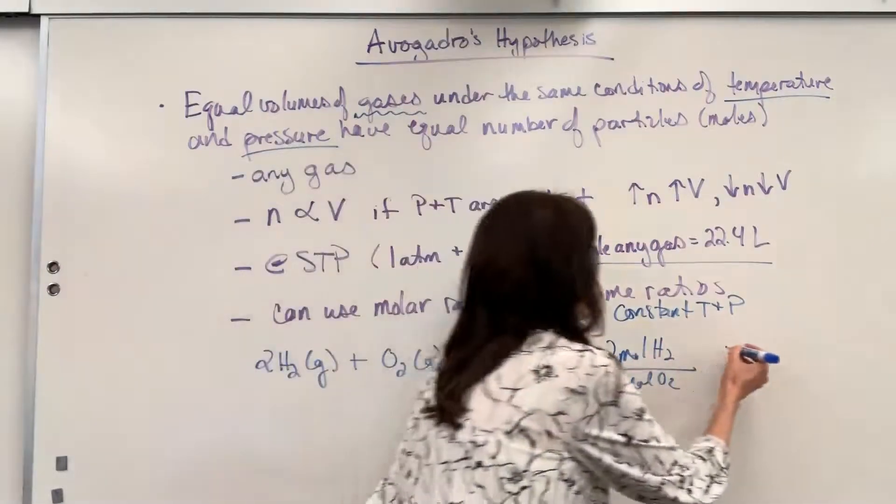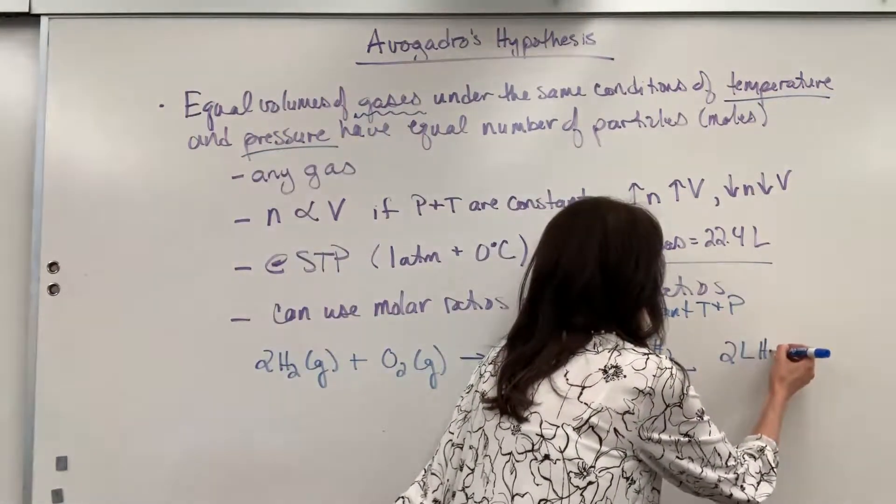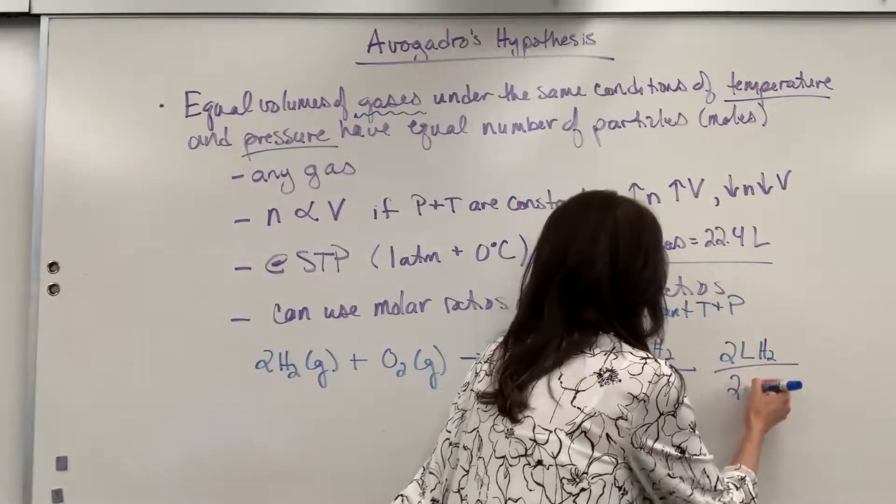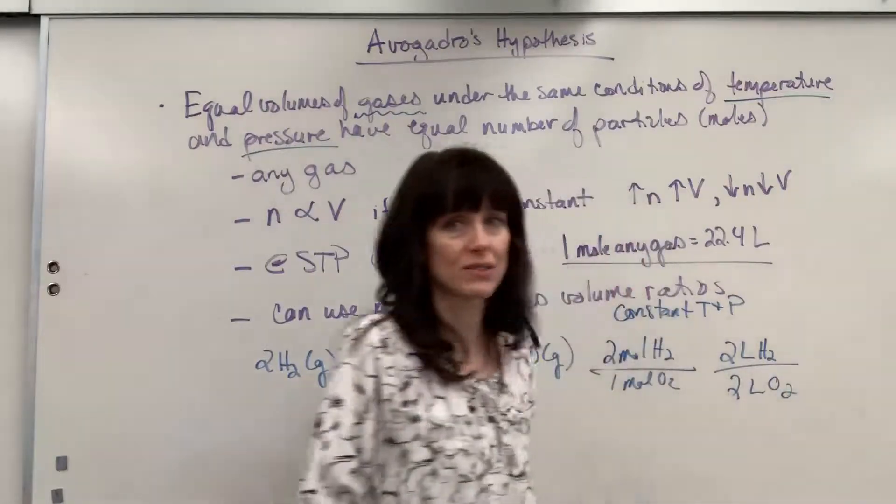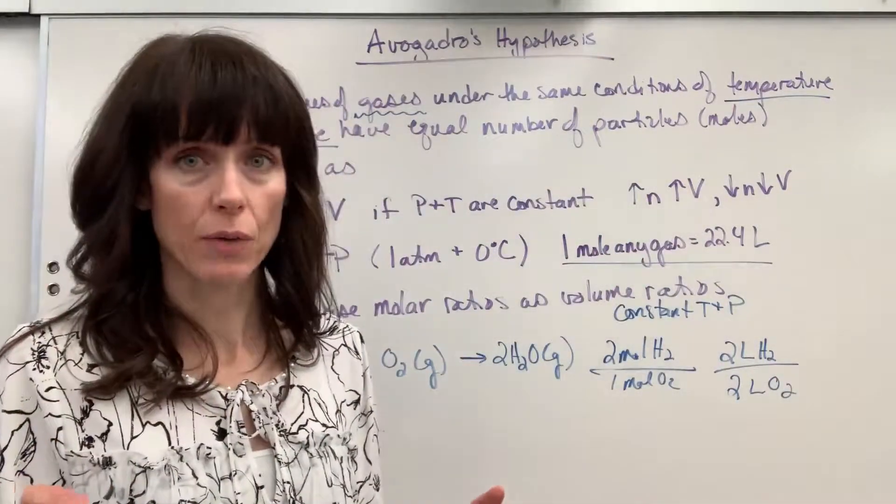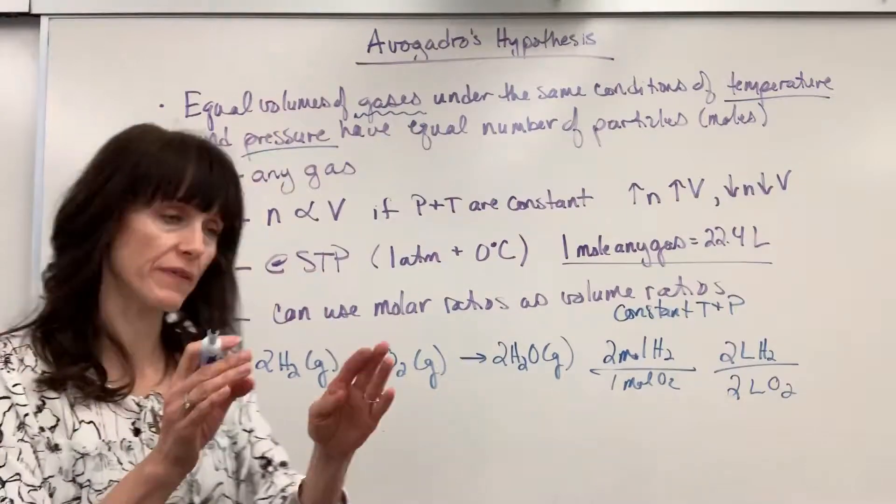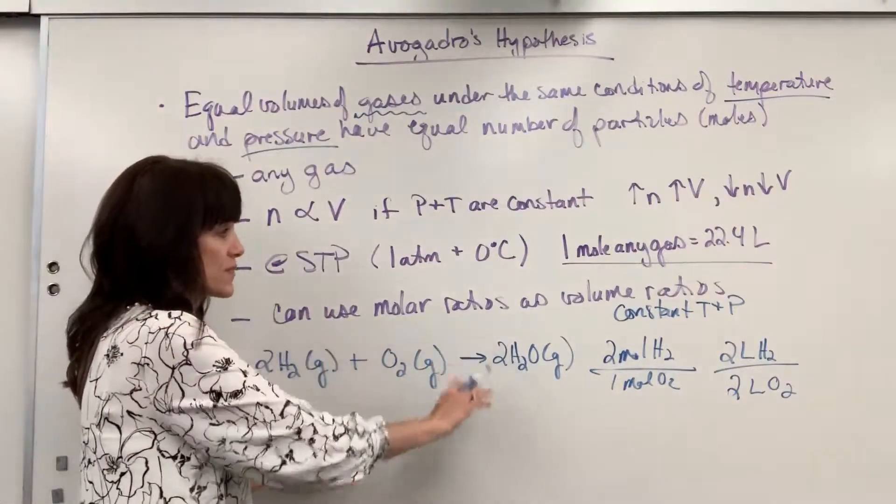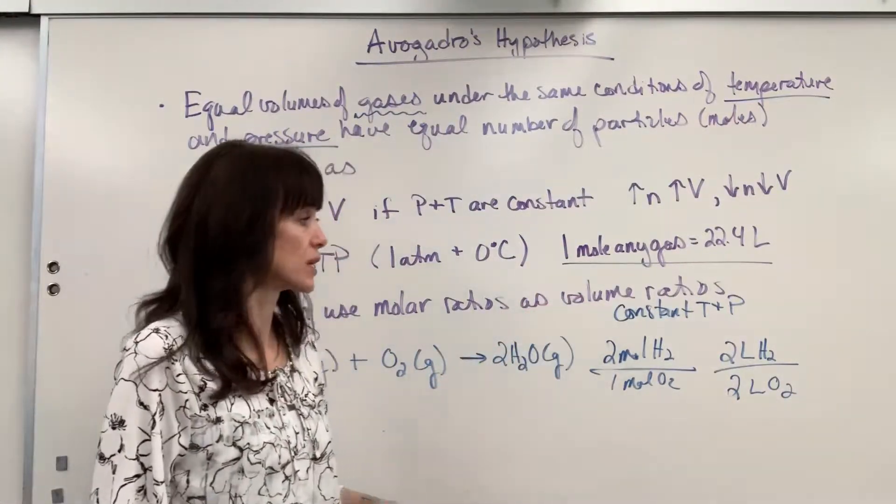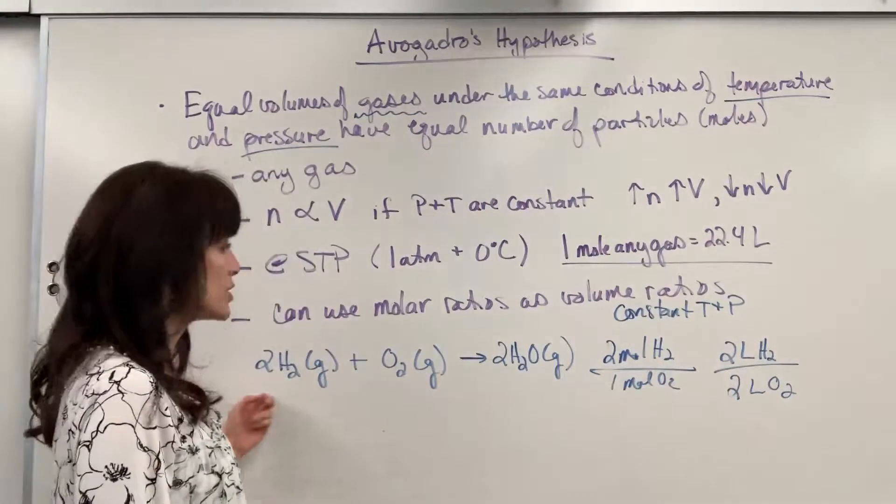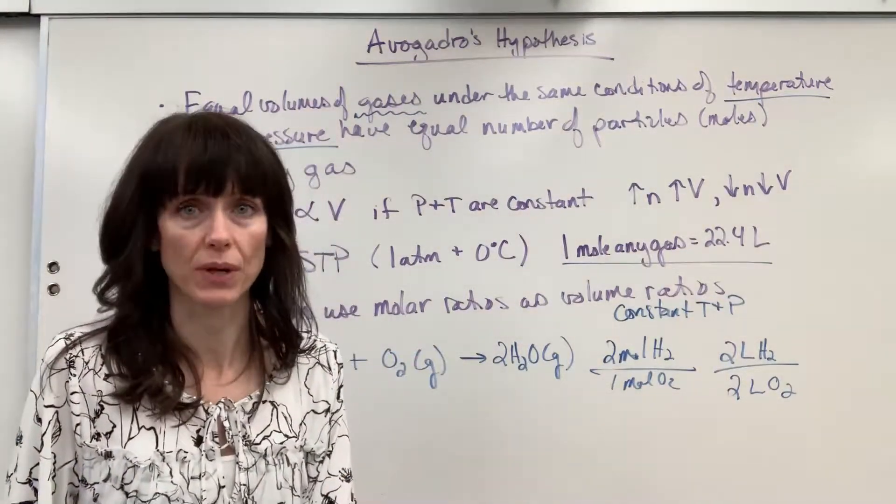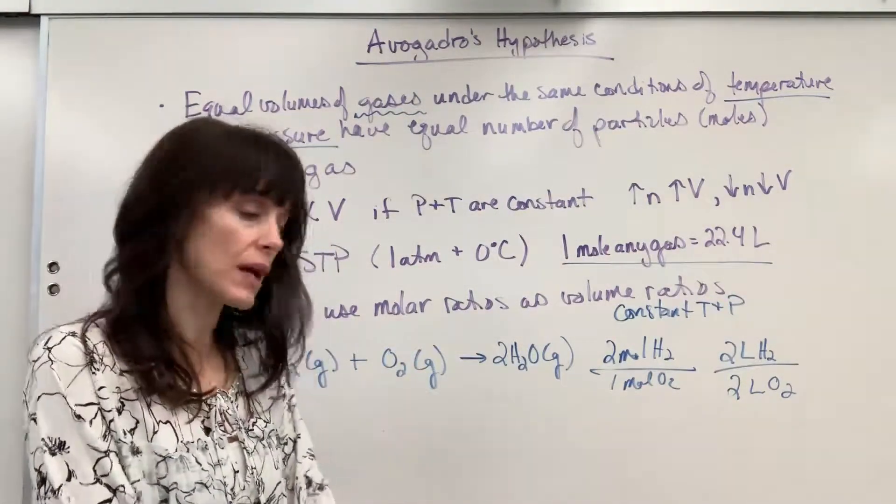So, I could say two liters of hydrogen react with two liters of oxygen. So, here's your big takeaway. In this specific situation that you have gas phases with a constant temperature and pressure, you can actually use molar ratios as volume ratios. So, let me give you an application of this.